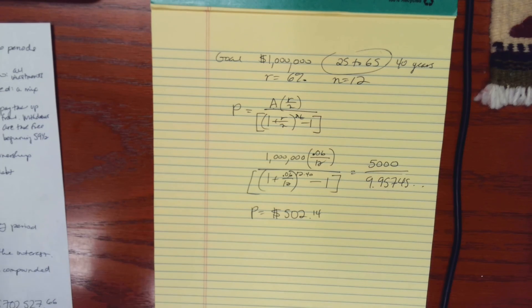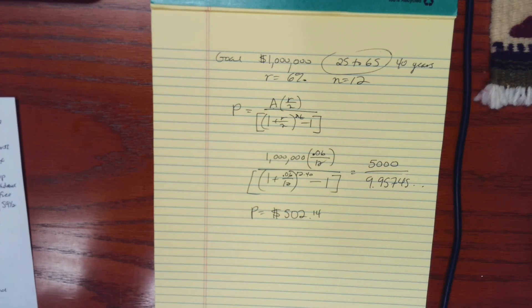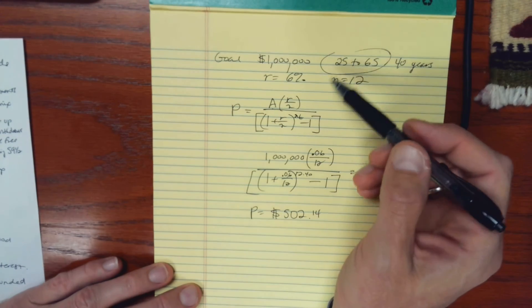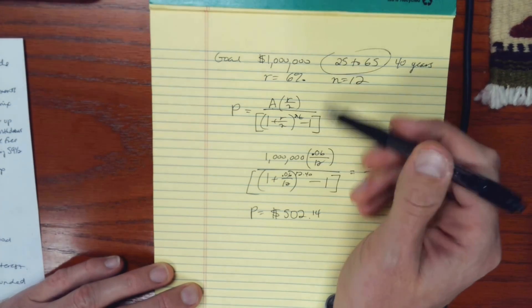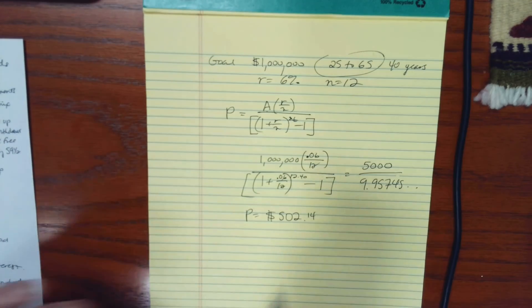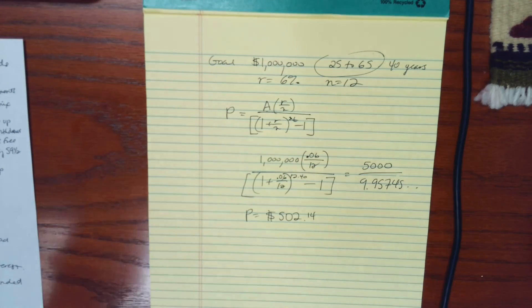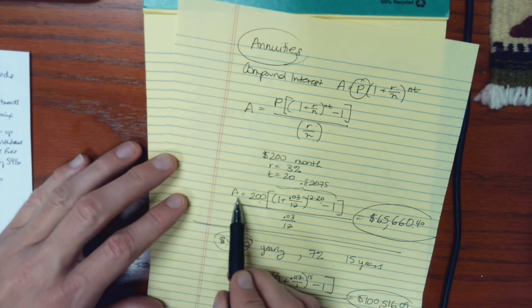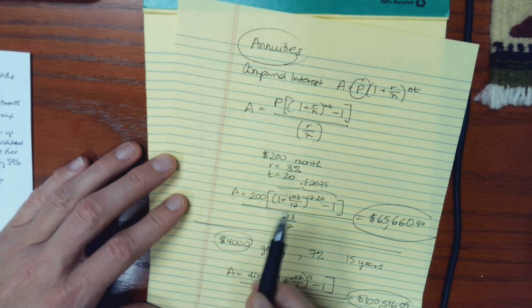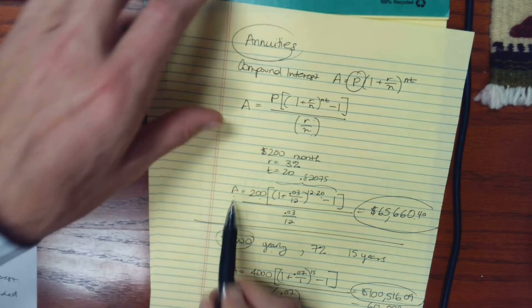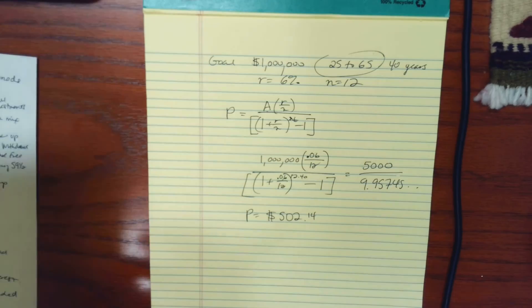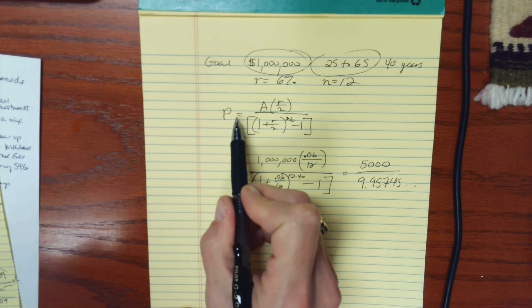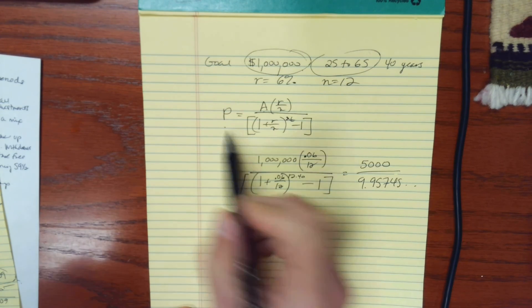Okay, so those are some examples showing the two versions of the annuity formula. One where you know how much you're going to contribute on a regular basis, and you're trying to figure out how much you'll end up with. So you're finding your future value. And in the other, we have a goal for our future value, and we're trying to figure out how much our regular contributions need to be.